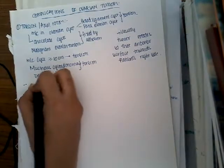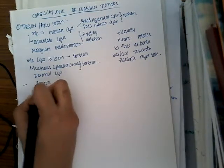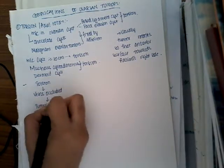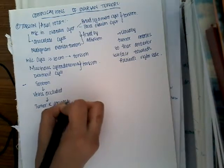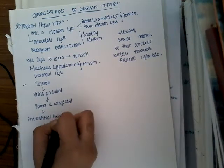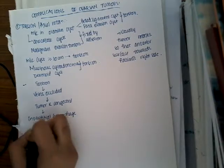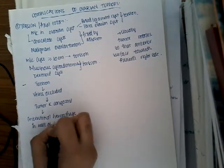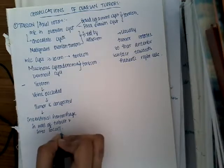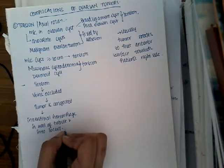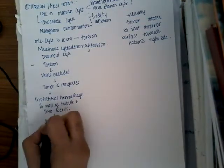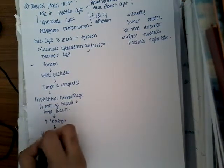As a result of torsion, the veins are occluded, causing congestion of the tumor. Because of this, interstitial hemorrhages form in the wall of the tube and also within the loculi. The increase in tension from this hemorrhage causes severe abdominal pain due to increased pressure within the tumor.